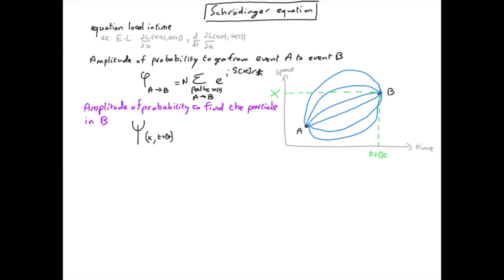To find the particle in B it has to be somewhere else just before. If we look at a tiny instant of time just before, we see the particle can be anywhere. We have to take into account all the possibilities for the particle to propagate towards B.